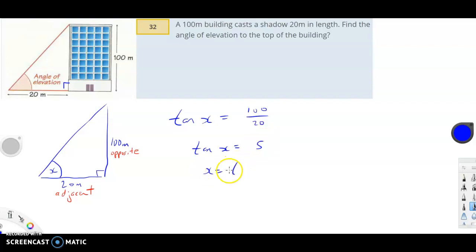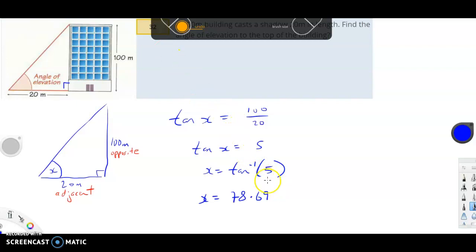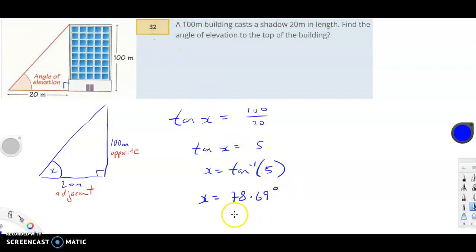So x equals tan inverse of 5. Now we go to the calculator: shift tan brings up tan inverse, put in 5, close the bracket, press equals. I get x equals 78.69. Rounding to two decimal places, it's 78.69 degrees. That's the angle of elevation required.